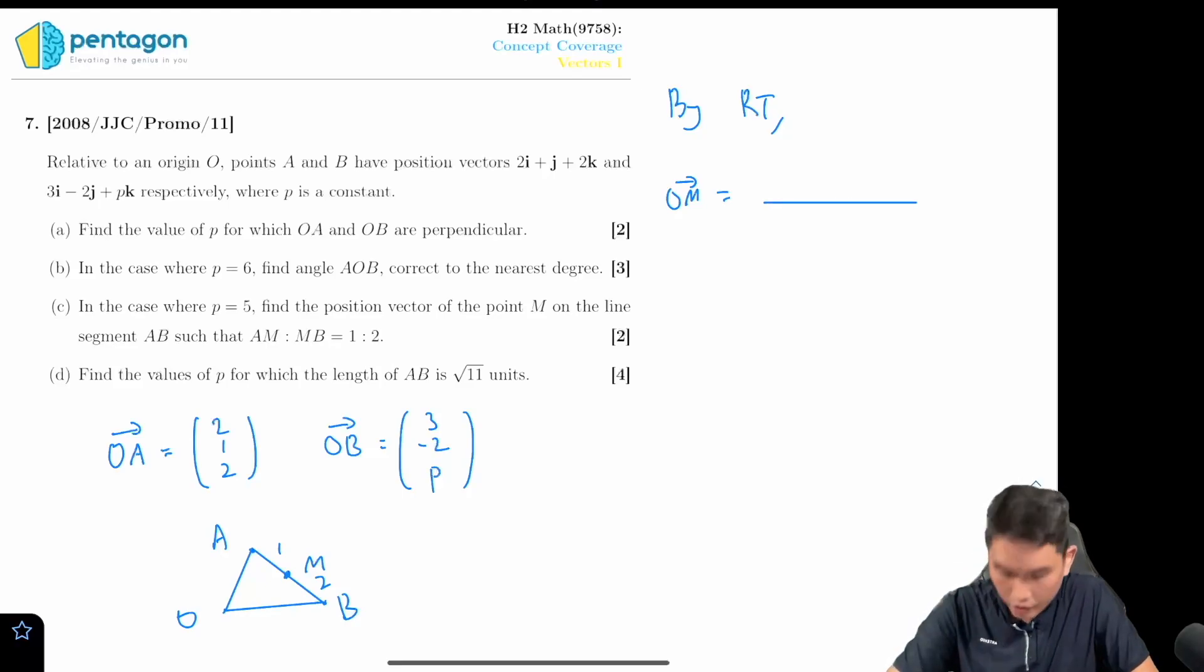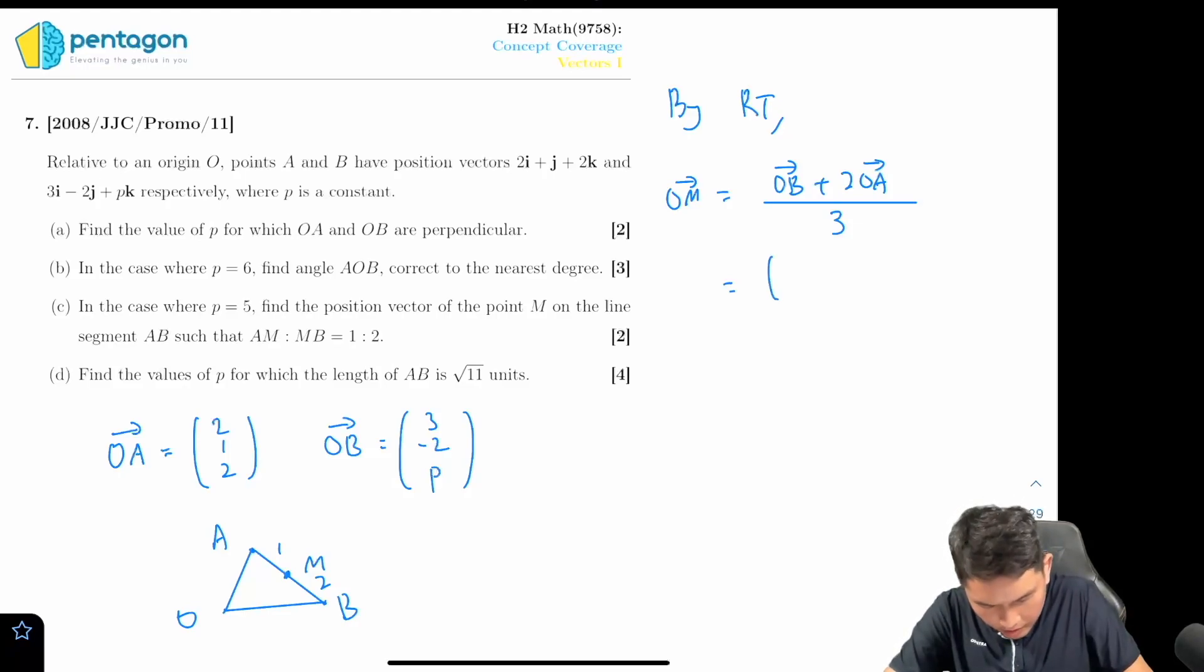Remember there's a cross multiplication going on, so one times OB plus two times OA divided by three. Now for OB this is going to be three negative two five. Remember p is equal to five.